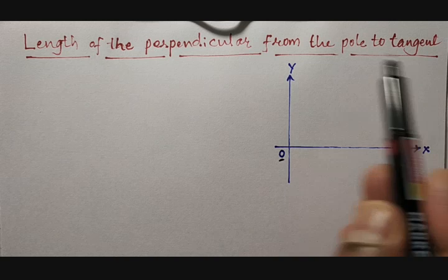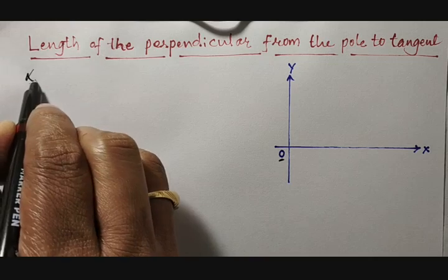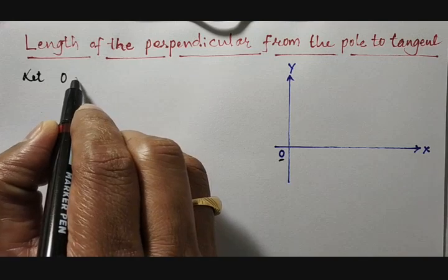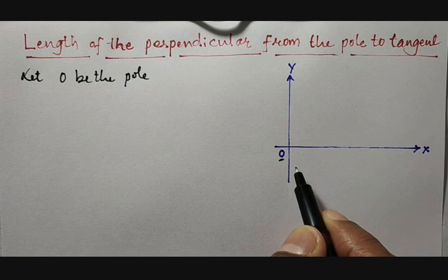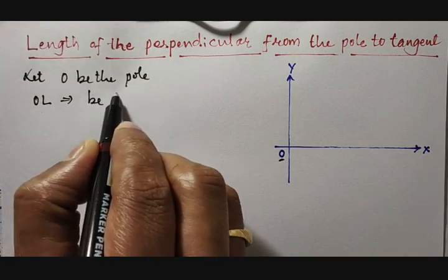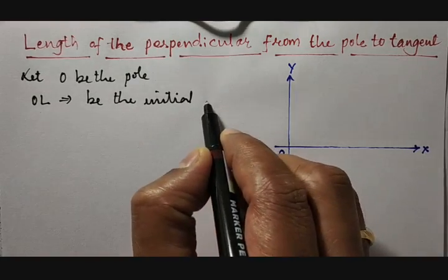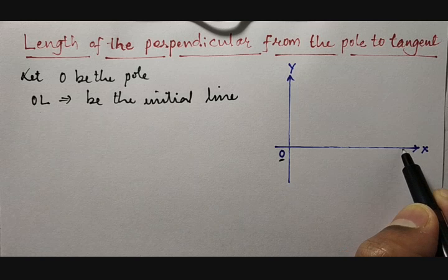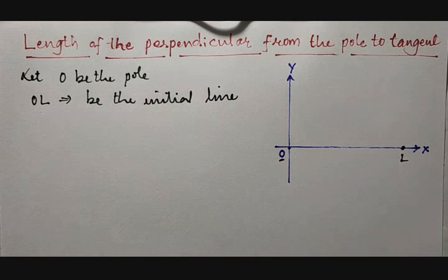Let us take an x-axis and y-axis graph and start with what is known. Let O be the pole — this is the origin, or else we can call it the pole. Then let OL be the initial line; from O to L it will be the initial line.